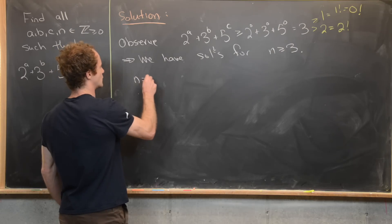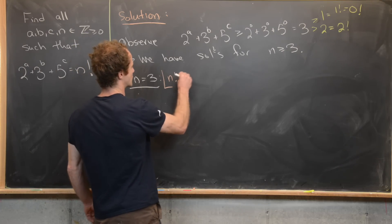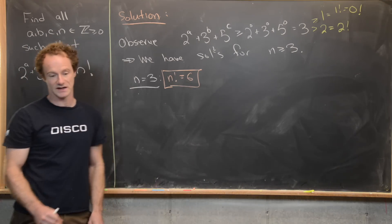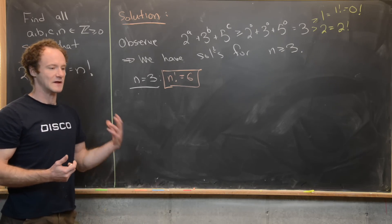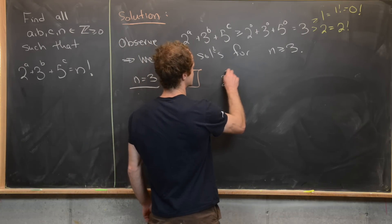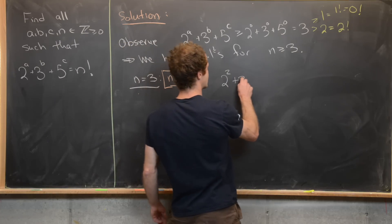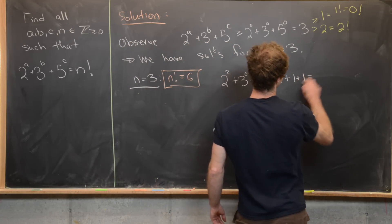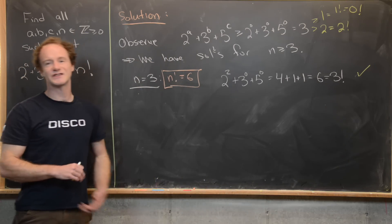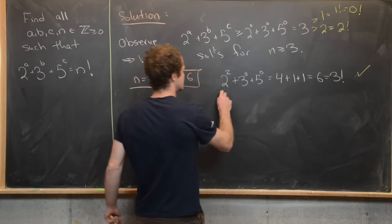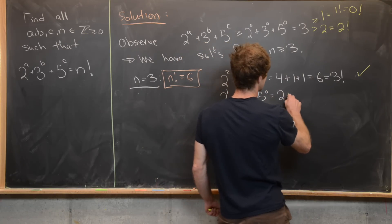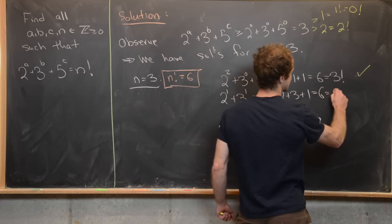Now we'll start looking for small solutions. For n = 3, n factorial equals 6, so we're looking for solutions where some power of 2 plus some power of 3 plus some power of 5 equals 6. We find that 2^2 + 3^0 + 5^0 = 4 + 1 + 1 = 6 = 3 factorial — that's our first solution. We also find 2^1 + 3^1 + 5^0 = 2 + 3 + 1 = 6 = 3 factorial — that's another solution.